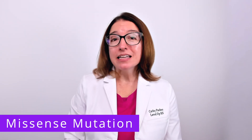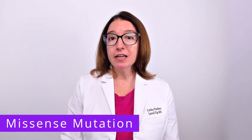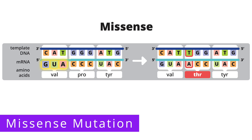Next, let's take a look at a missense mutation, which does cause a different amino acid to be incorporated into the polypeptide. We have the same template DNA strand, with the nucleotides CAT, GGG, and ATG. This gets transcribed into mRNA, which results in the nucleotides GUA, CCC, and UAC. Looking up these codons in the genetic code chart, we see that this sequence codes for the amino acids valine, proline, and tyrosine.